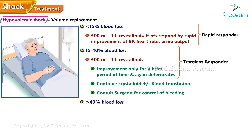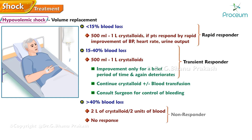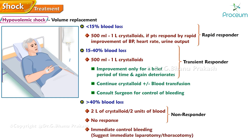For transient responders, continue crystalloid with or without blood transfusion and consult a surgeon for control of bleeding. If there is greater than 40% blood loss, two liters of crystalloid and two units of blood are given. If there is no response, they are categorized as non-responders and need immediate control of bleeding, requiring immediate laparotomy or thoracotomy.